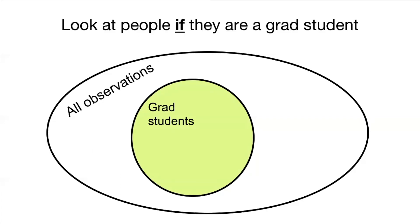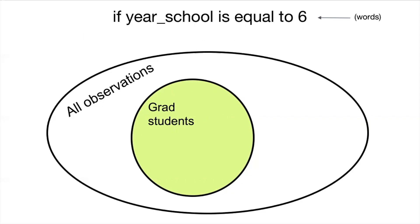We've denoted grad students by a circle that's part of all observations. We would refer to this sample using a logical if statement — if we wanted to focus on grad students, we would say look at people if they are a grad student. This is common vernacular but it's called a logical if. From part one, STATA holds information about each observation using variables. The way we identify grad students is through the variable year_school, which tells us what year someone is in school — specifically the value of 6.